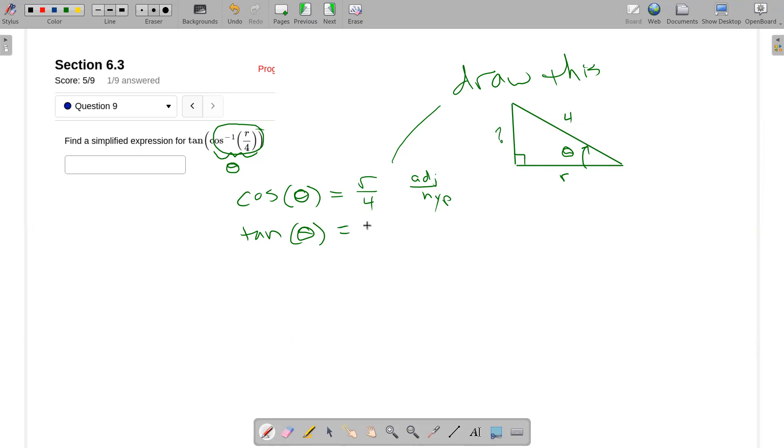Tangent, that's going to be the opposite side divided by the adjacent side. Y over x, y that vertical, x is that horizontal, like the way I've drawn it. So let's see, I know the adjacent side, I don't know the opposite side yet. So I could use the Pythagorean theorem to find that.